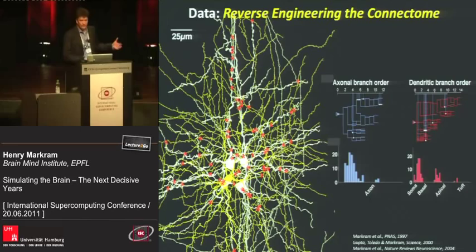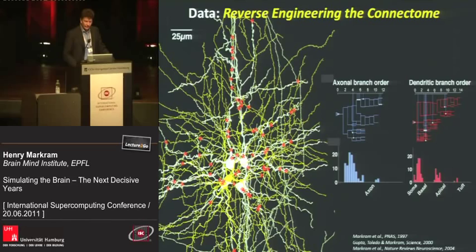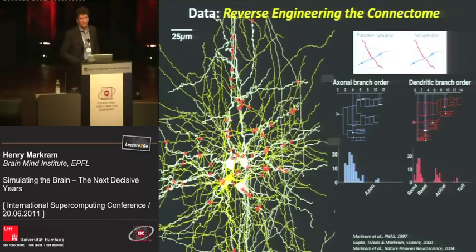It looks like a mess, and the first time you look at it you think, okay, let's all go home — there's no way you'll ever understand this. But if you keep doing many of these recordings, you discover there are statistical patterns of where these synapses are going to be located. What we found is that when neurons are connected and talking to each other, the fiber providing that synapse is very little different from a fiber that is not providing the synapse.